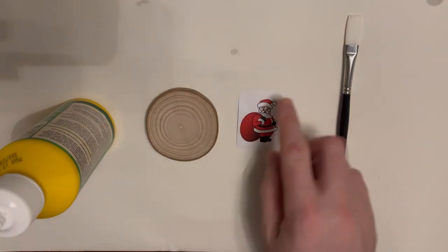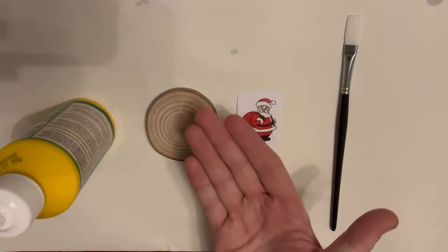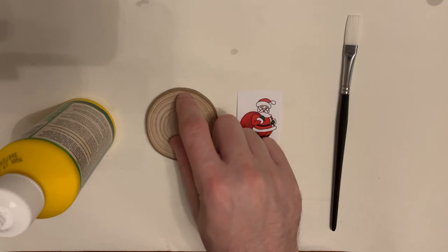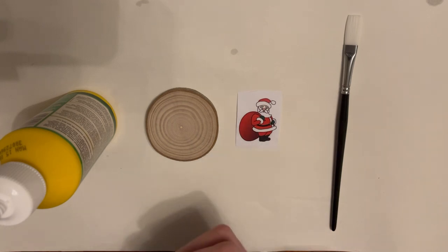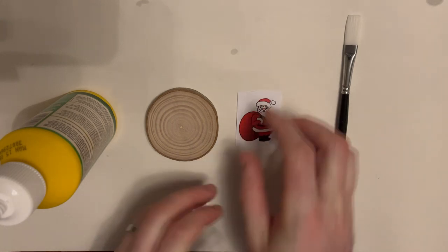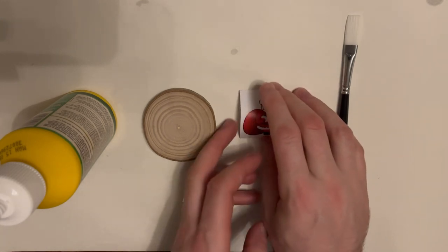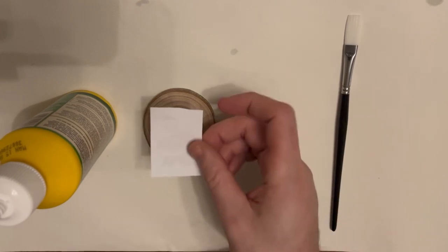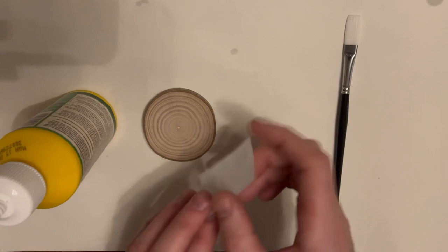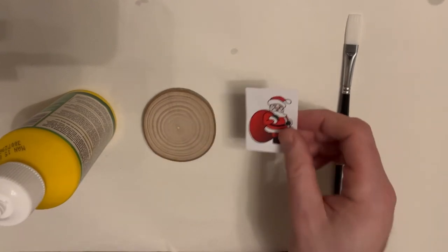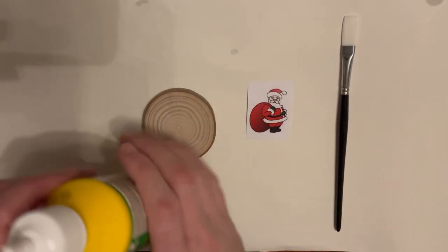The first part of this process is sticking this image face down onto our wood slice using wood glue. If you were using text or writing, you'd have to make sure that the text is mirrored because when you stick it down, you're reversing it, so it has to be a mirrored image or mirrored text.